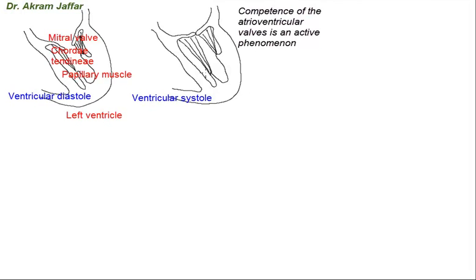It should be kept in mind that the mitral cusps are smaller in area and thicker than those of the tricuspid valve, and consequently are not ballooned back so much into the atrium during ventricular systole. The septal or anterior cusp of the mitral valve is thicker and more rigid than the posterior cusp. Now let's view these two atrioventricular cusps from another perspective, as if looking at the heart from above.